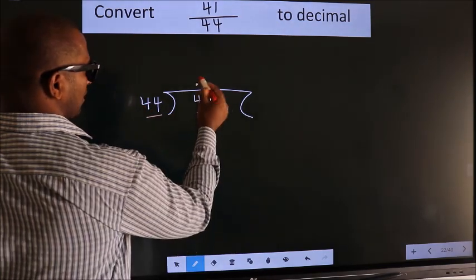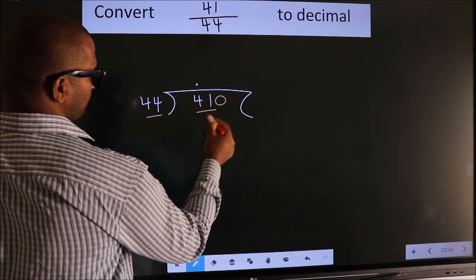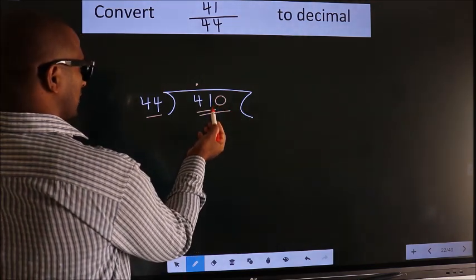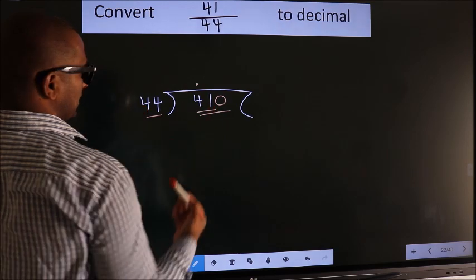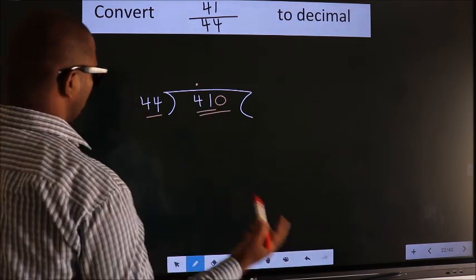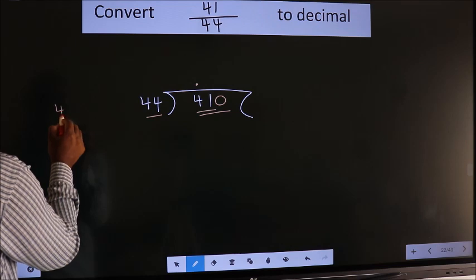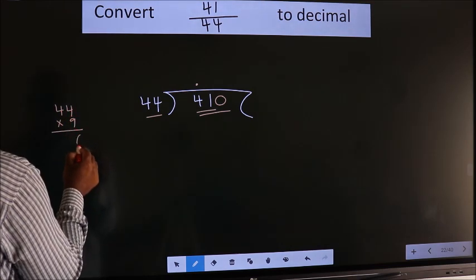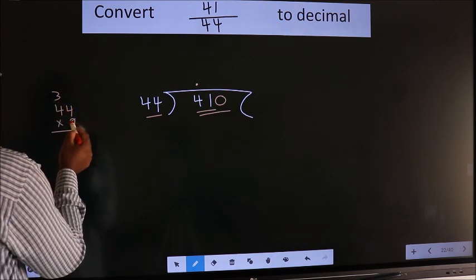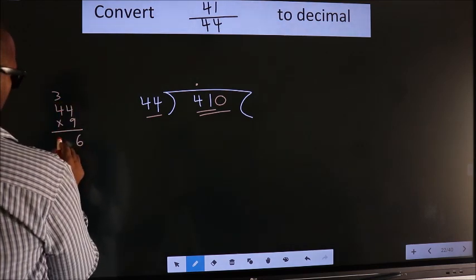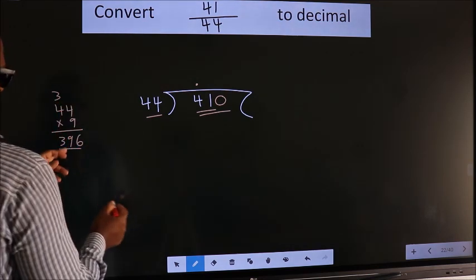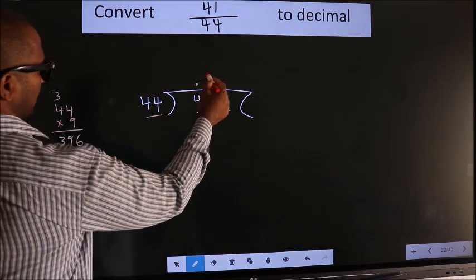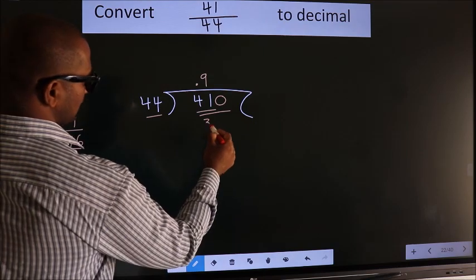We should put a dot here and take 0, making 410. A number close to 410 in the 44 times table: we go with 9. So 44 × 9 = 396 (9×4=36, carry 3, 9×4=36+3=39), giving 396. This is close to 410, so 9 times gives 396.